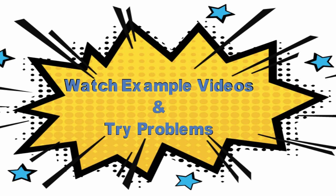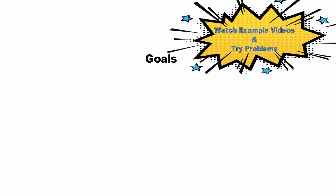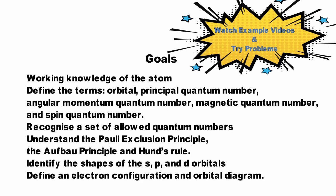We have now covered the basic concepts of modern atomic theory. For a detailed tutorial on writing electron configurations, watch the electron configurations and orbital diagram video included in this section. Work through the quantum number examples that have full solutions provided. You should now have a working knowledge of the atom and be able to define the terms orbital, principal quantum number, angular momentum quantum number, magnetic quantum number, and spin quantum number. You should be able to recognize a set of allowed quantum numbers and understand the Pauli exclusion principle, the Aufbau principle, and Hund's rule. You should be able to identify the shapes of the s, p, and d orbitals and define an electron configuration and orbital diagram.